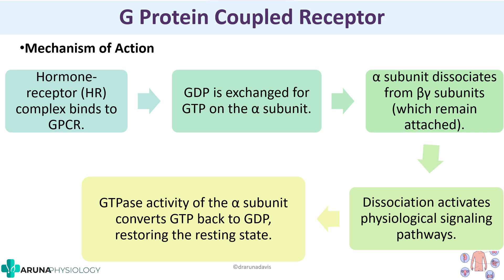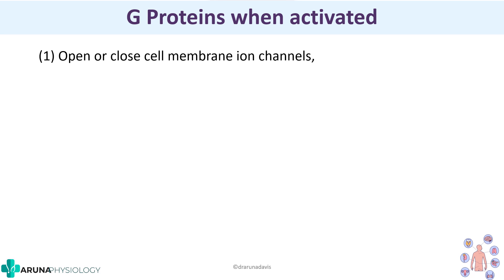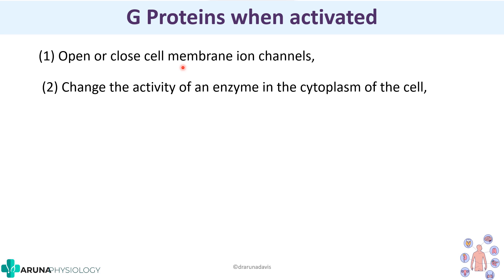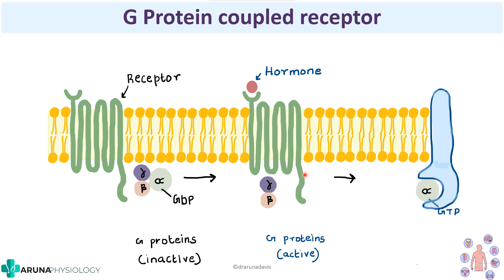Once G-proteins are activated, different effects can occur: it can open or close cell membrane ion channels, change the activity of an enzyme in the cytoplasm, or activate gene transcription. These are the methods by which the hormone exerts its effect. When a G-protein is activated, the alpha subunit will dislocate and can cause opening of an ion channel or activation of an enzyme, which in turn causes activation of other second messengers. It is very important that we know more about these second messengers.